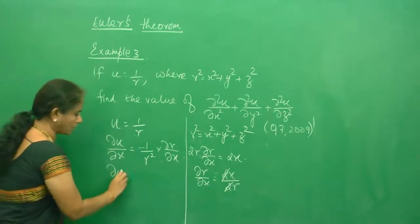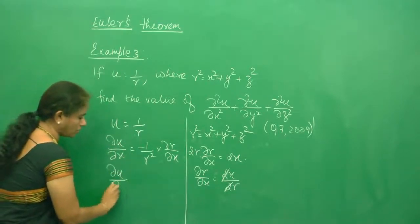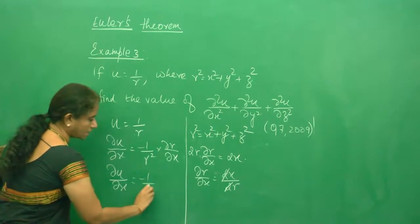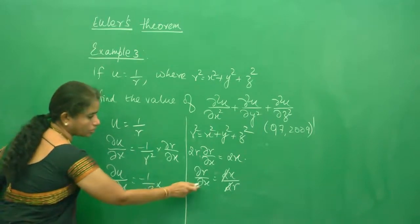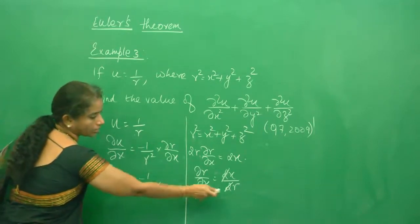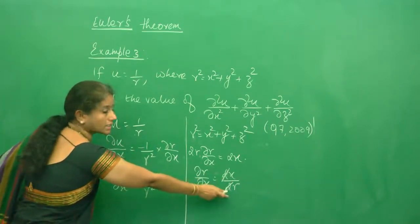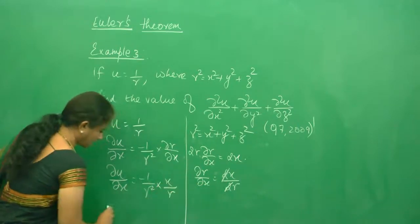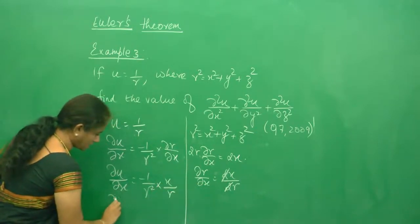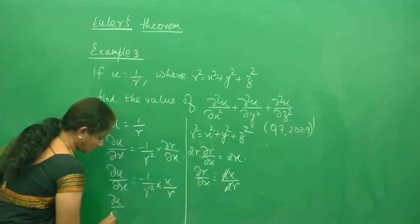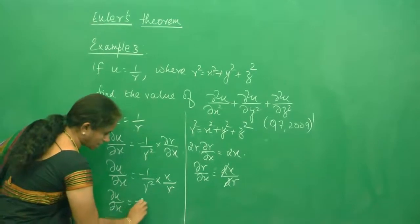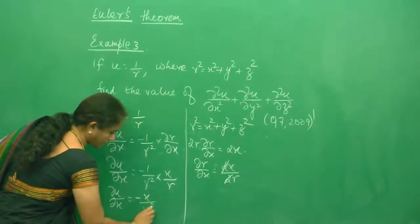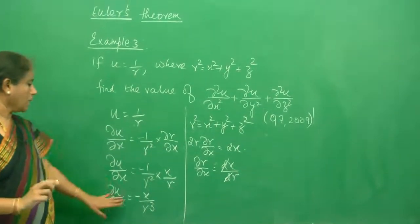So ∂u/∂x = -1/r² · ∂r/∂x = -1/r² · x/r. Simplifying, ∂u/∂x = -x / r³.